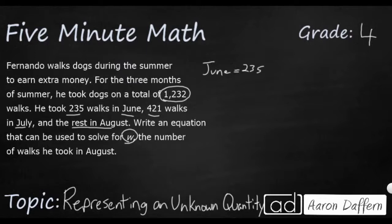And if we wanted to say July, it's going to be 421. August is what we're looking for. That's our missing variable, missing quantity, and that's simply represented by W. And that W is just going to be walks. So how can we figure that out?